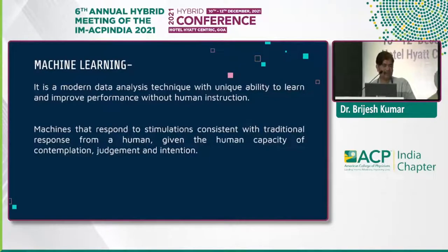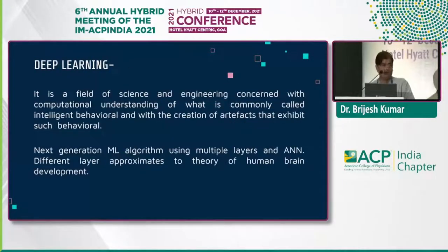Machine learning improves performance without human inspectors. On the other hand, machines respond to stimulations consistent with traditional responses for a human, given a human capacity of contemplation, judgment, and intensity. Deep learning is a field of science and engineering concerned with computational understanding of what is commonly called intelligent behavior and with the creation of artifacts that exhibit such behavior.